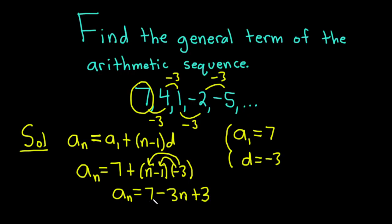We're almost done. Let's combine like terms. So 7 plus 3 is 10. So we have our final answer. The general term, a sub n, of the arithmetic sequence is equal to 10 minus 3n. And so that would be the answer in this case.